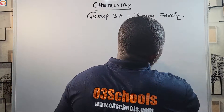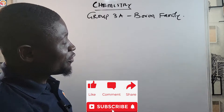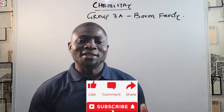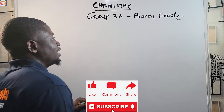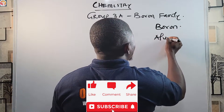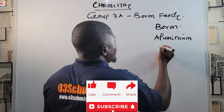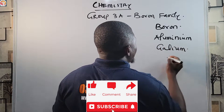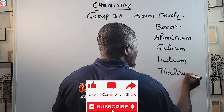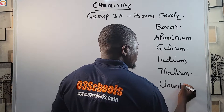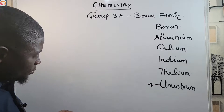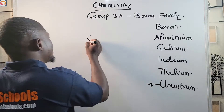There's no major mystery why we call this group the Boron family — it's simply because boron is the first element in the group. In Group 3A we have: boron, aluminium, gallium, indium, thallium, and ununtrium.